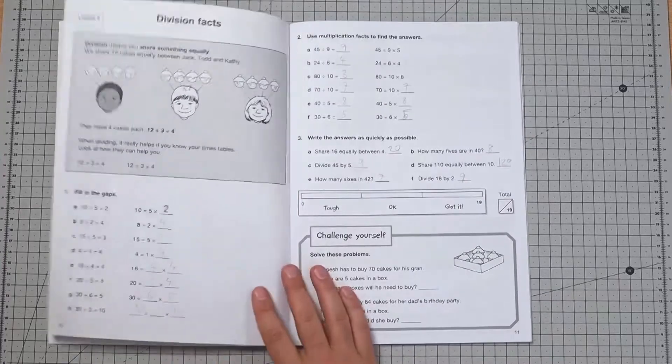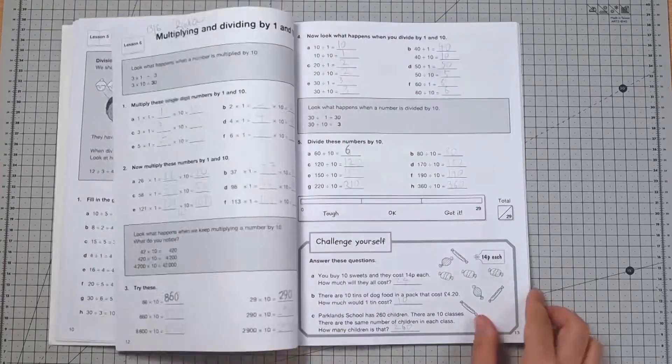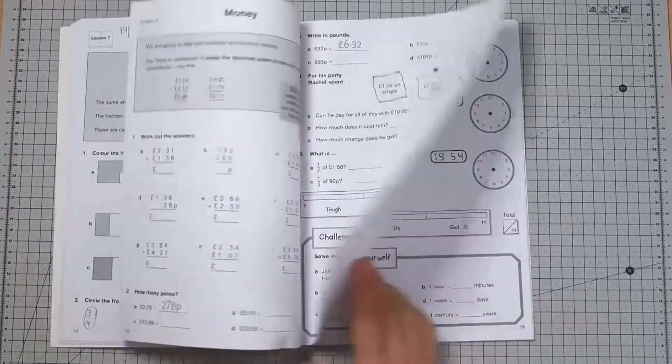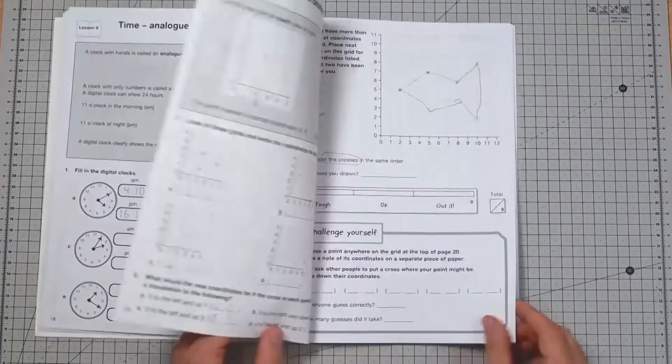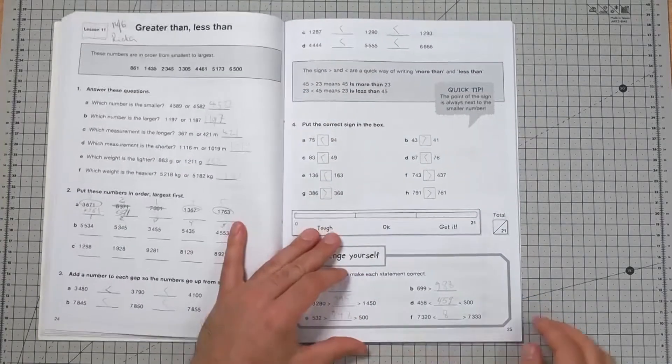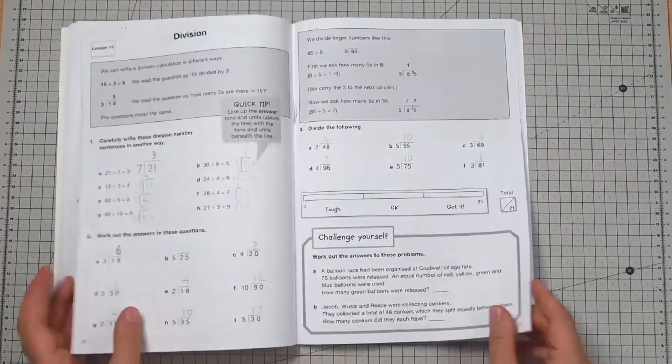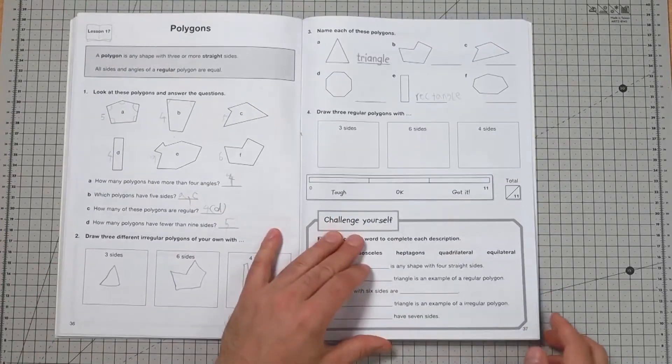It moves quickly from basic operations through to fractions, through to geometry, through to telling time. It covers a lot of ground in 64 relatively short pages.